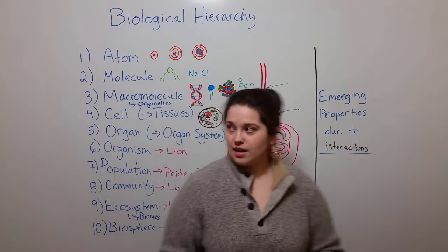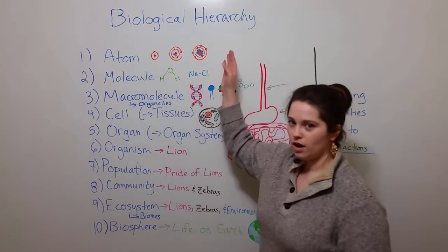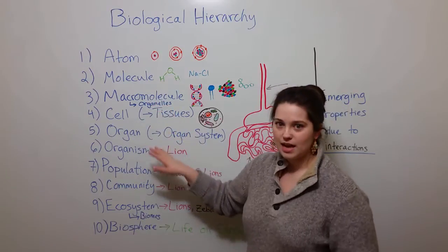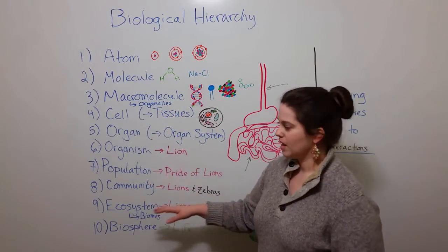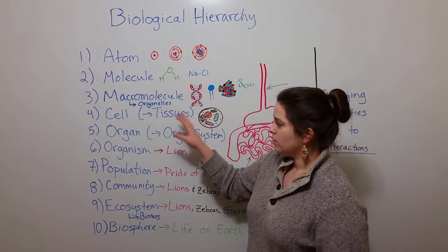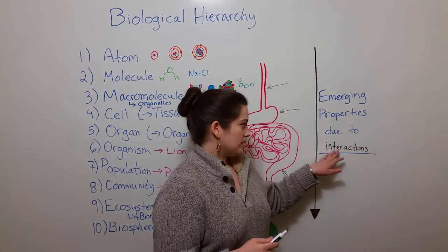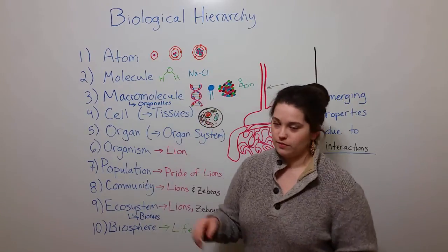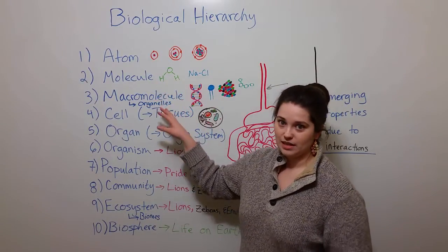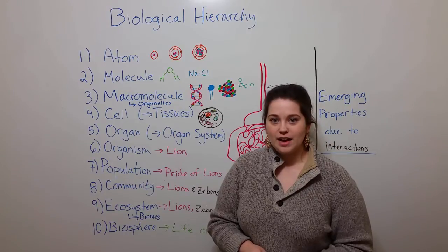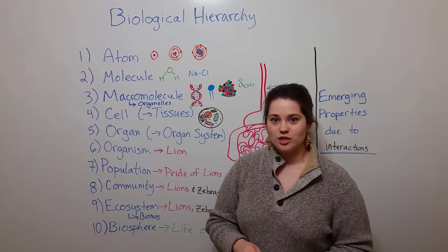And so you can see again that with the biological hierarchy, it is about increasing complexity as you move through the hierarchy. Each level acquiring new function and ability due to specific interactions present at the previous level. So that is Biological Hierarchy Simplified. I hope you learned a lot, and thanks for watching, Biology Professor!